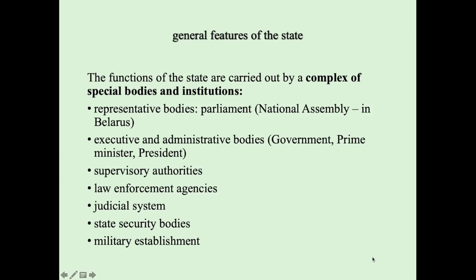The functions of the state are carried out by a complex of special bodies and institutions. They are representative bodies like parliament — for example, in the Republic of Belarus, parliament is the National Assembly. Then executive and administrative bodies like the government, prime minister, and president. Then supervisory authorities, law enforcement agencies, the judicial system, state security bodies, and the military establishment.